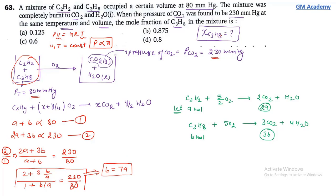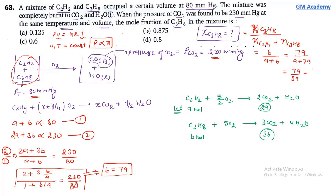Mole fraction of C₃H₈ = B/(A + B). Substituting B = 7A: = 7A/(A + 7A) = 7A/8A = 7/8 = 0.875. Option B is the correct answer.